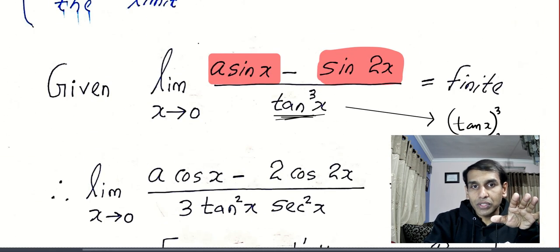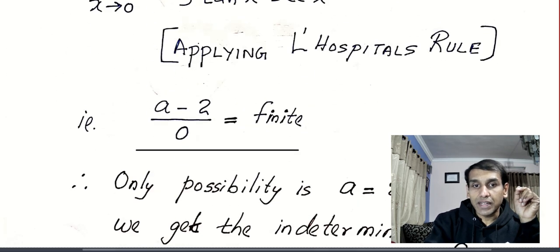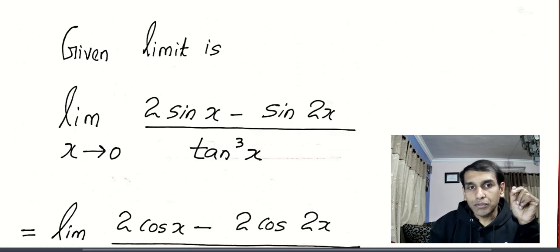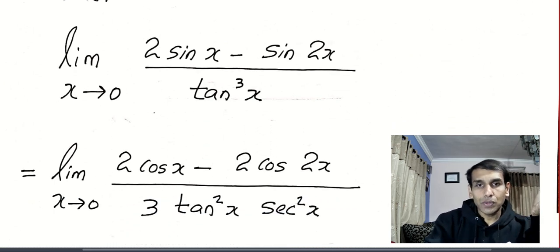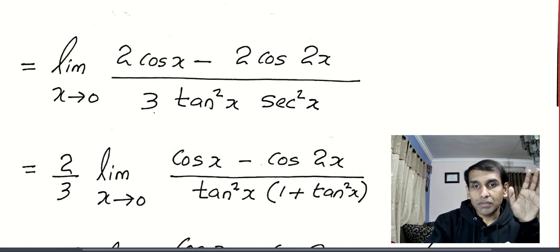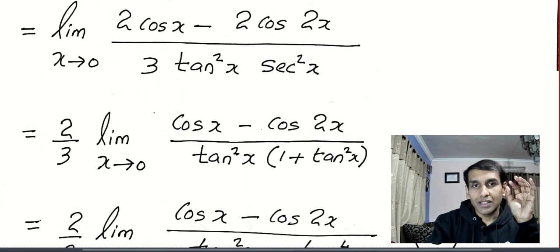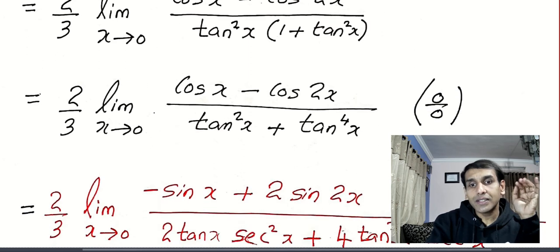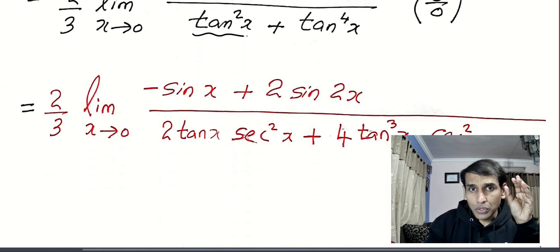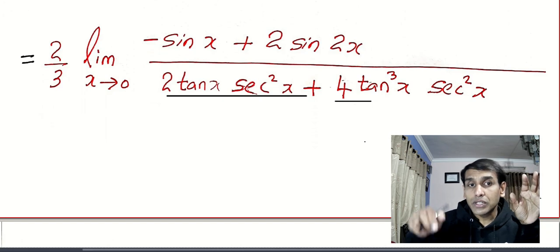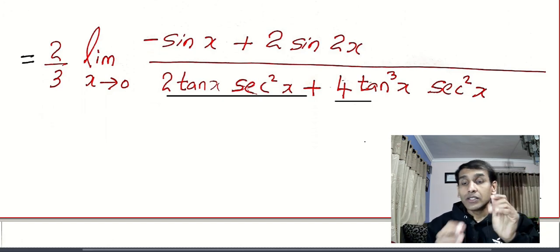Now they ask one more thing: evaluate the limit. Since I know the value of a, I plug in a = 2. It is again 0/0, so I apply L'Hôpital's rule — I'll leave this for you to try. I'll scroll through the solution. Try it yourself as there are large differentiations involved. Comment the answer below.